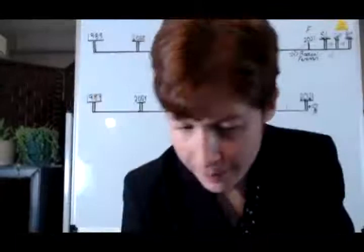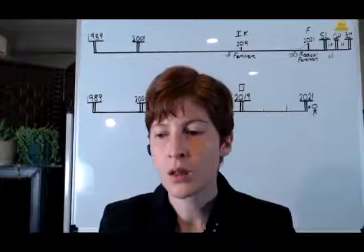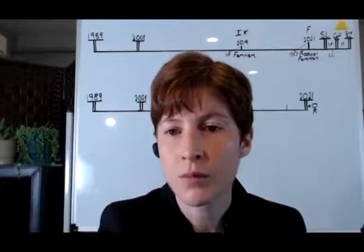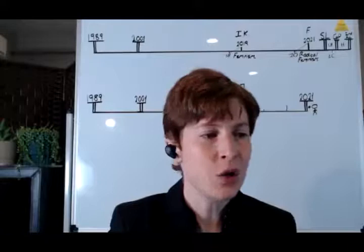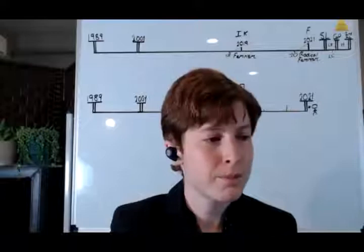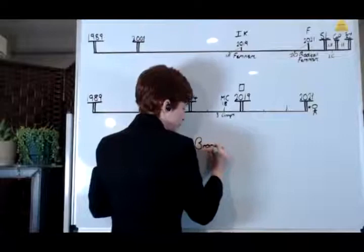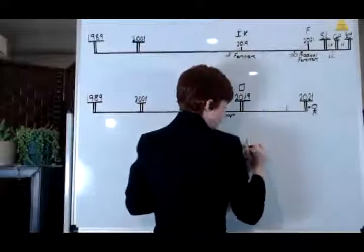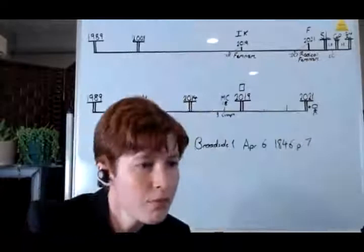We often picture that there's two groups in this history. There's not two, there's three. There are those who immediately reject, refuse to receive it, and they fight it. Reference is Broadside One, April 6, 1846 paragraph seven. One group fights.